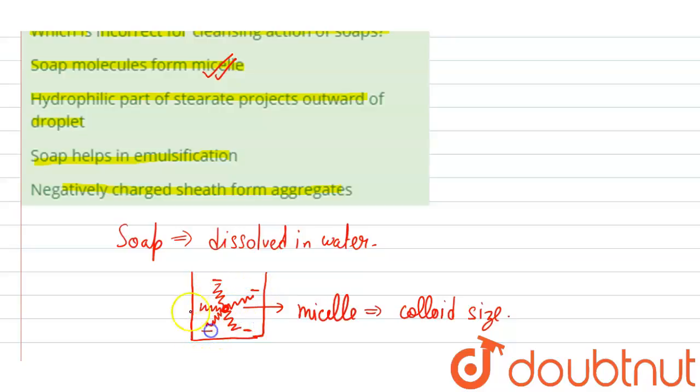Now in this micelle, the negative ion, which is the hydrophilic part, will be projected outward from the dirt. So yes, the hydrophilic part of stearate ion projects outward. So the second option is also correct.